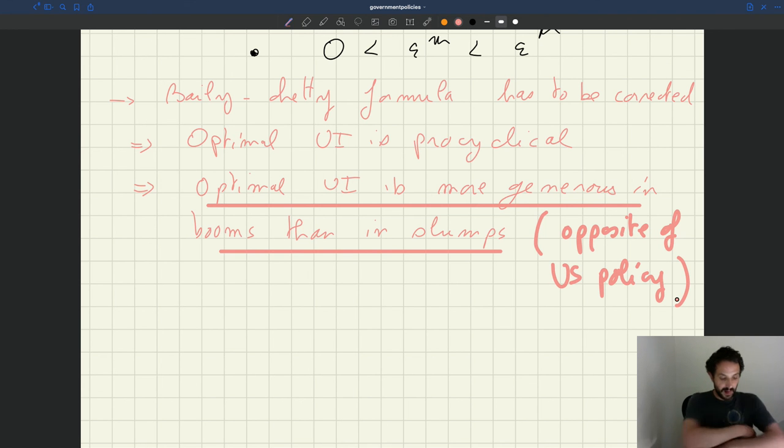And the intuition is that in this model, what happens is that in good times, your tightness is too high. You want to lower your tightness. But UI does exactly that. UI is able to lower tightness, as we've seen. And so you give more UI in good times, that lowers your tightness and improves your welfare. In bad times, it's the opposite. Tightness is too low, your unemployment is too high. But by cutting UI, you're able to boost tightness and reduce unemployment. So you do exactly that. So you cut your UI in bad times.